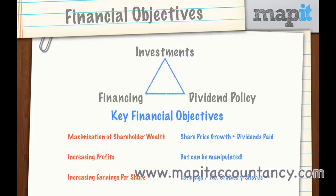Often we'll be asked to assess whether a business has achieved its financial objectives — calculating share price growth and dividends paid to see the increase in shareholder wealth, or calculating the earnings per share or even the price to earnings ratio. The P/E ratio puts the share price over the earnings per share, telling you what the market thinks of the share. A high P/E ratio means the market is willing to pay a lot for that share relative to its earnings; a low P/E ratio means they have some doubts about the business.